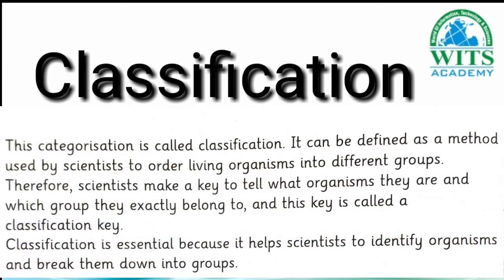Classification — this categorization is called classification. It can be defined as a method used by scientists to order living organisms into different groups. Scientists make a key to tell what organisms they are and which group they exactly belong to. This key is called a classification key. Classification is essential because it helps scientists to identify organisms and break them down into groups.